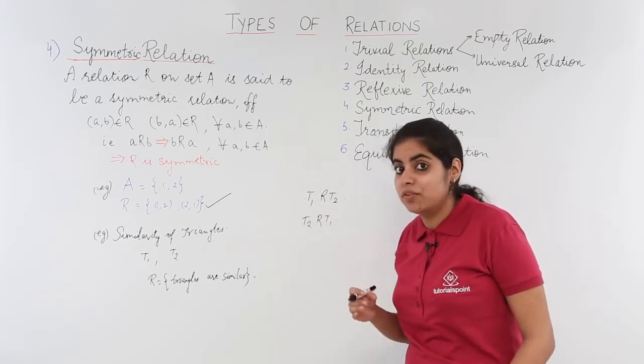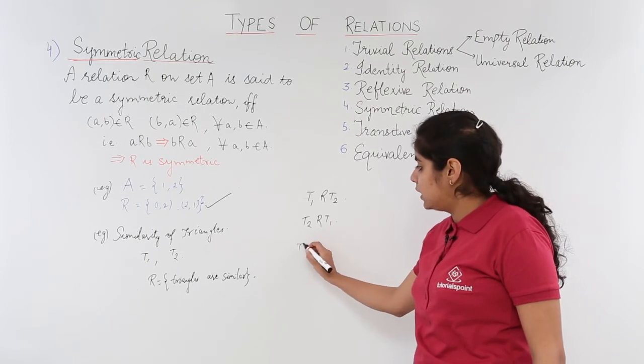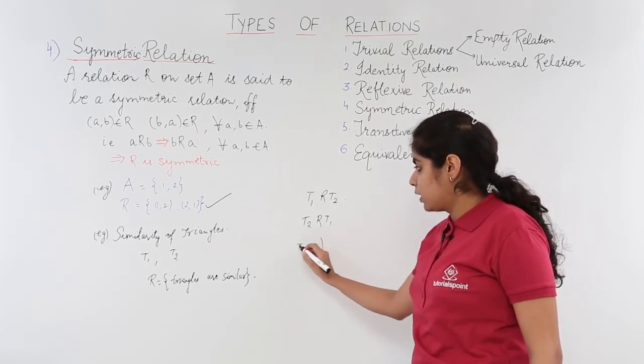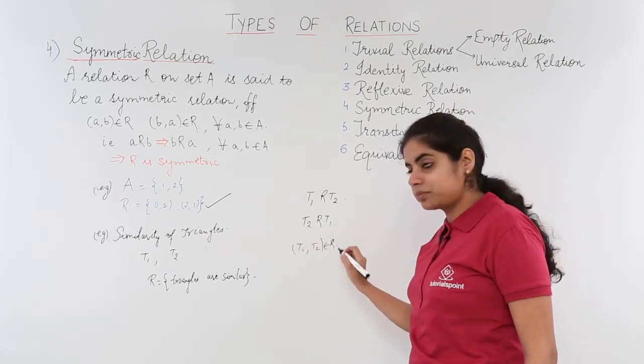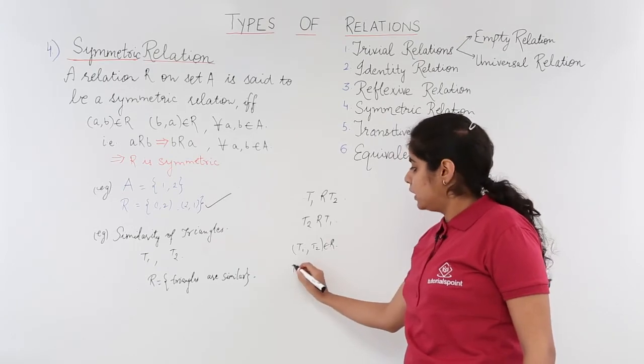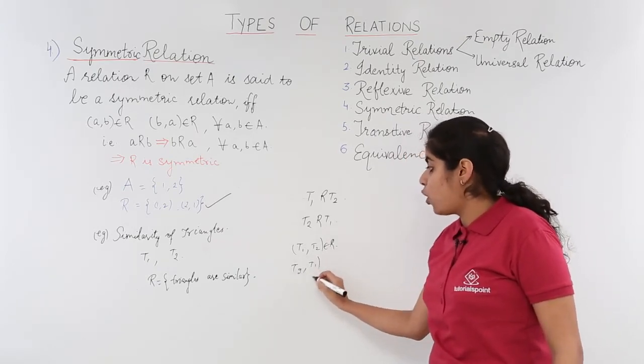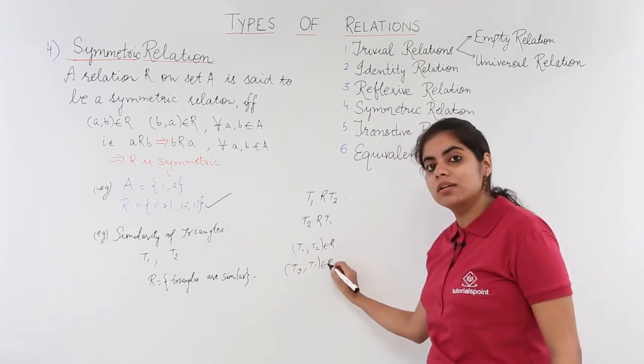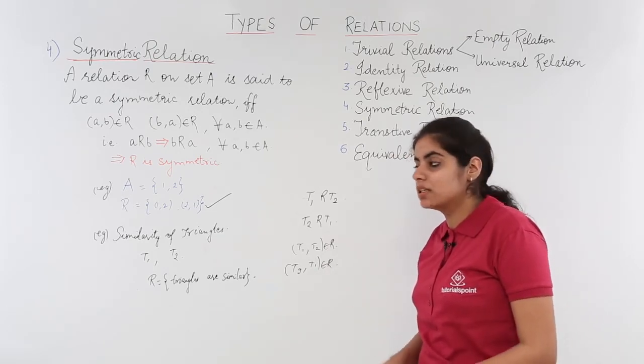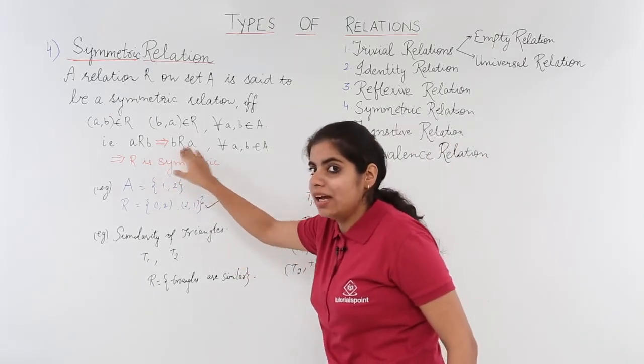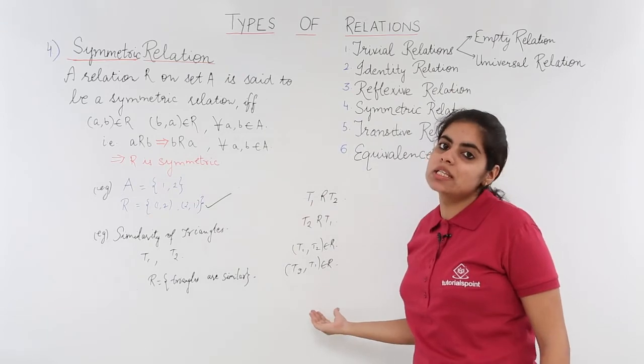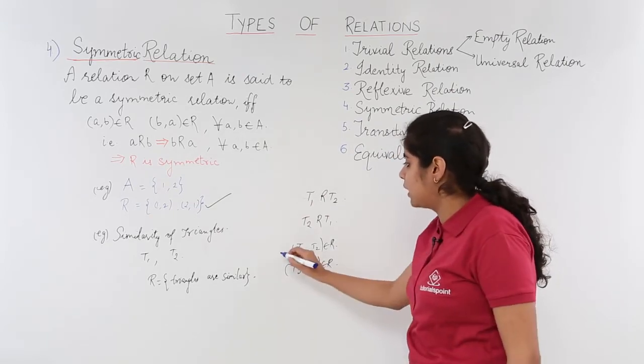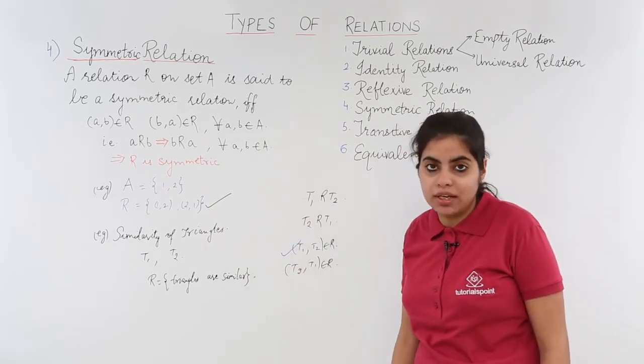Since we have both the things present here that (T1, T2) is belonging to R, also (T2, T1) also belongs to R. Both the things are present: A related to B and B related to A. So this is a perfect example again of symmetric relation.